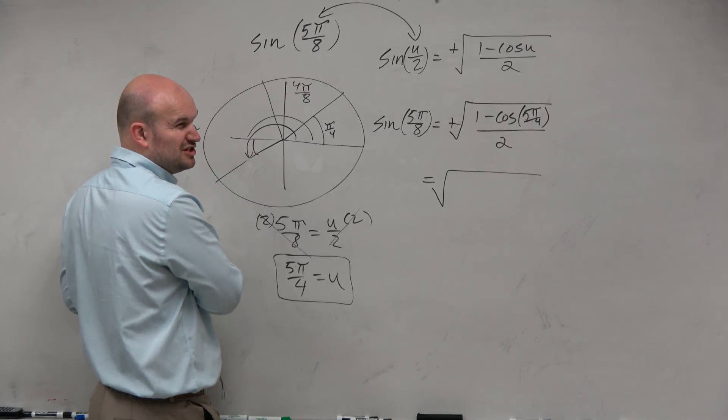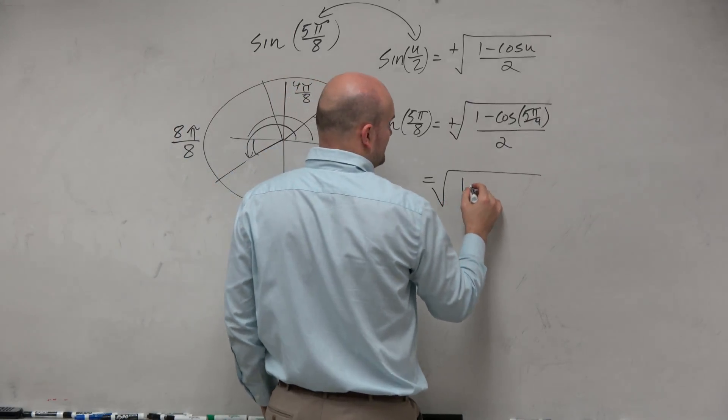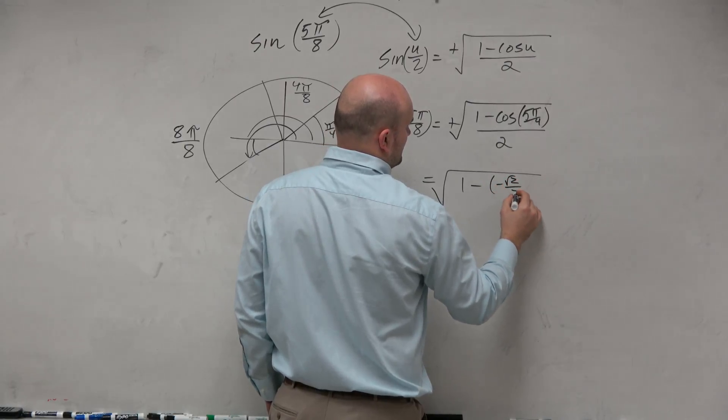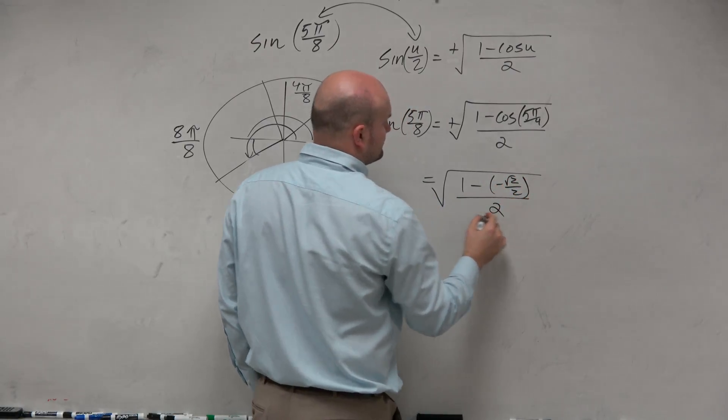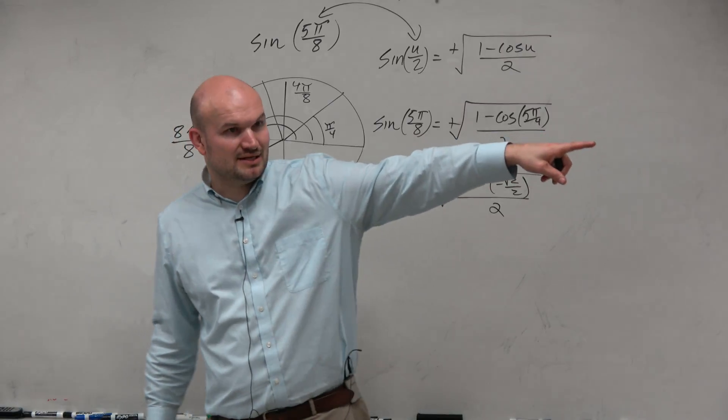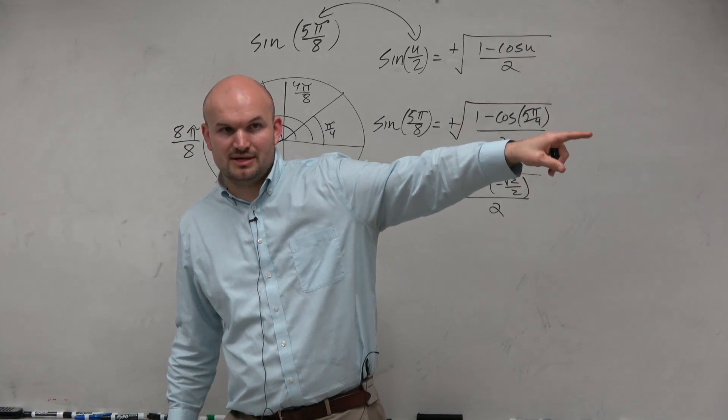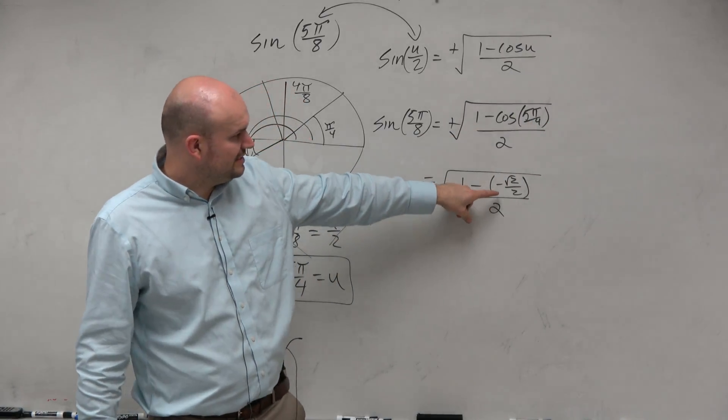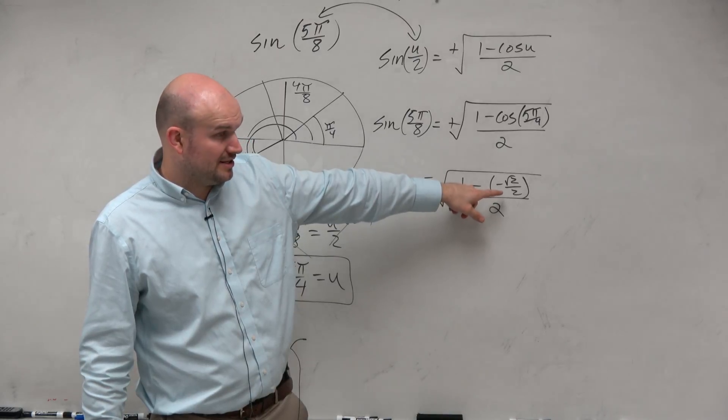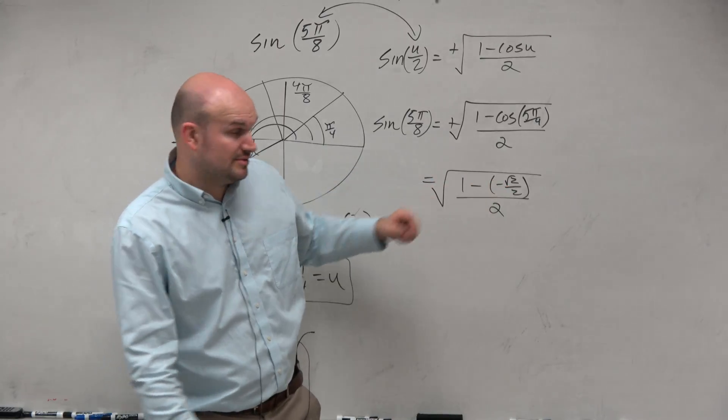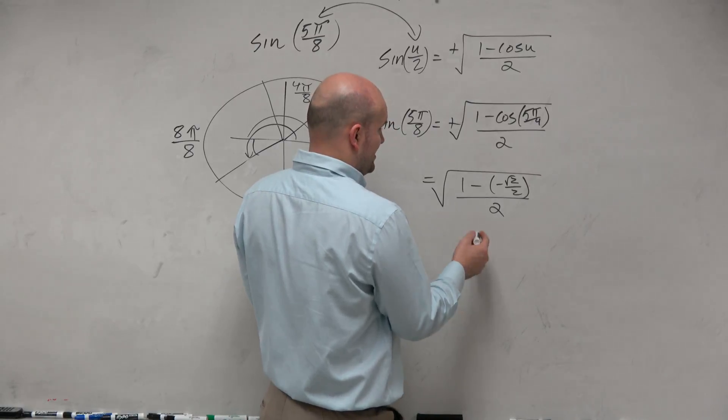Negative. Negative square root of 2 over 2 over 2. Hey, that kind of looks something similar to our warmup problem, right? So that means we would need to get rid of our denominator here, or we want to get rid of this 2 here, so we can multiply by a 2 on the top and bottom.